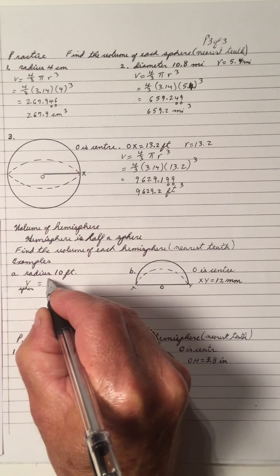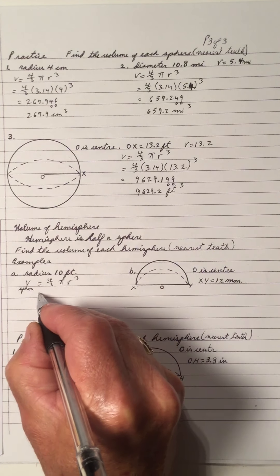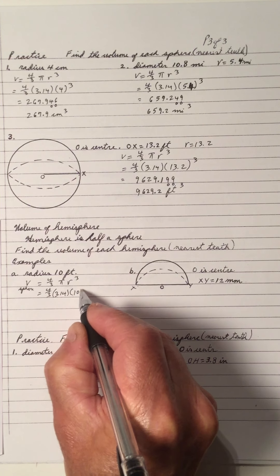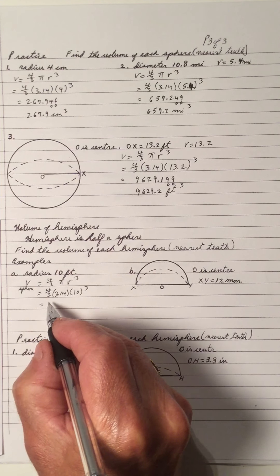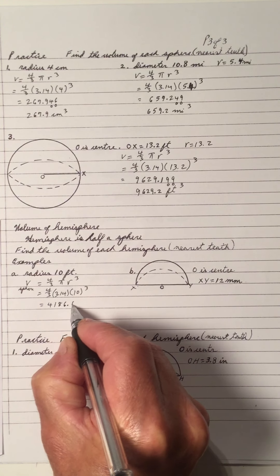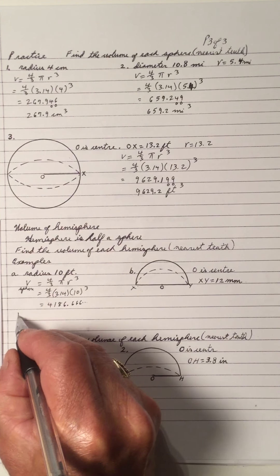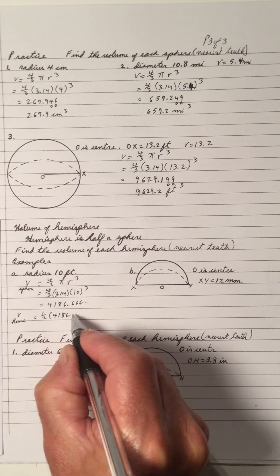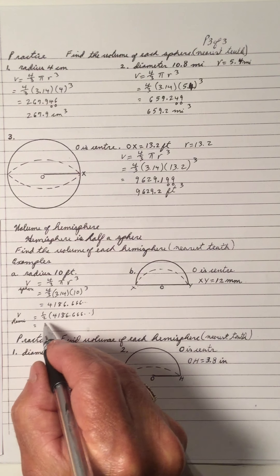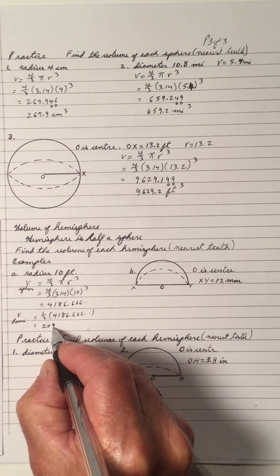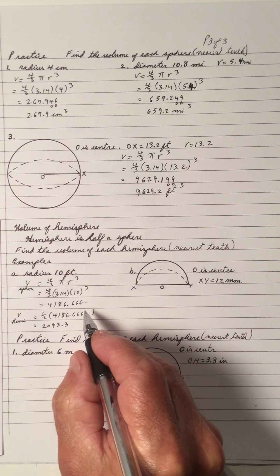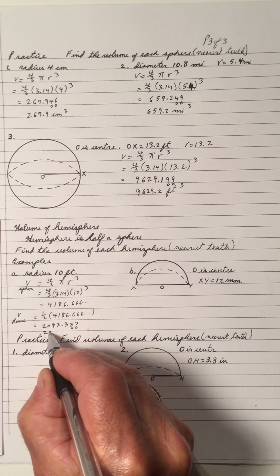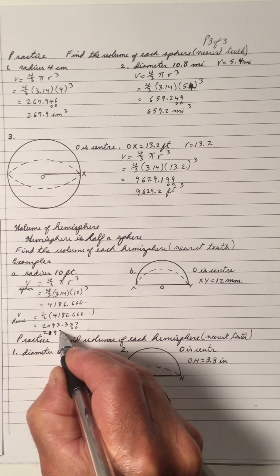So let's find the volume of a sphere first, which is 4 over 3 pi R cubed. That's 4 over 3, pi is 3.14, and the radius is 10, cubed. With a calculator, that works out to be 4186.66. So the volume of a hemisphere is half of that — divide by 2 — and you'll get 2093.333. When you round that off, you get 2093.3 cubic feet.